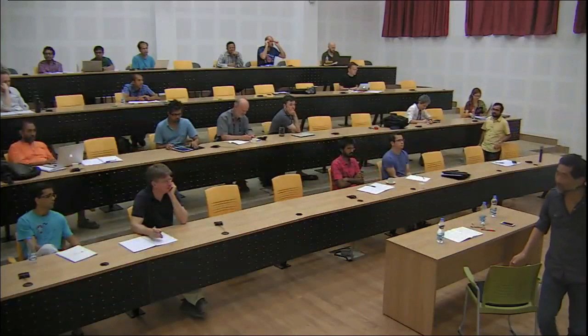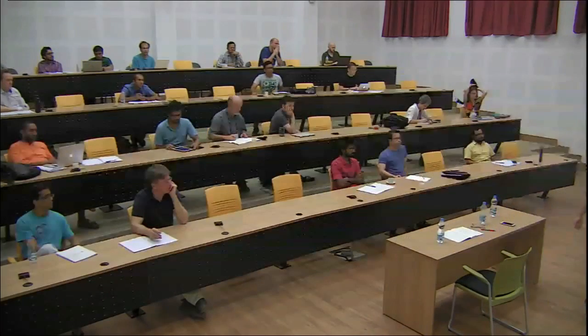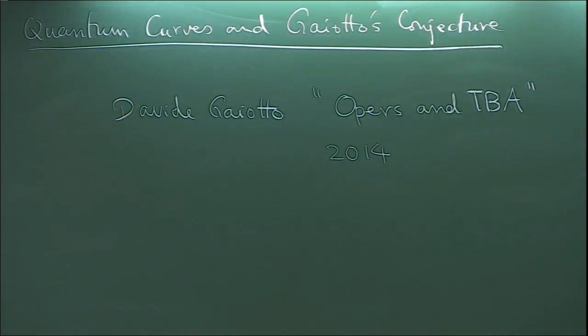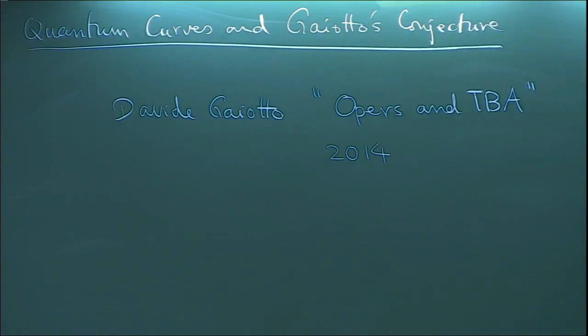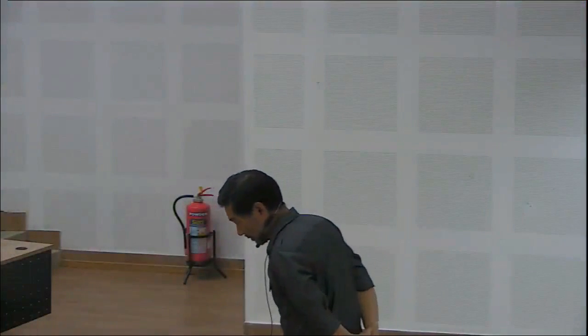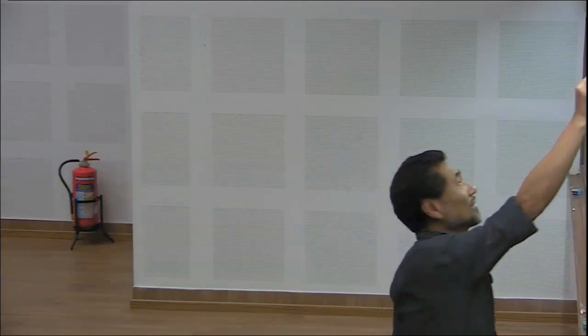Thank you for the invitation, in particular to the service. This is my first visit to India, and I'm enjoying the conference so far. Today I'd like to talk about the Gaiotto Conjecture and its recent resolution. The Gaiotto Conjecture is about certain branes in the Hitchin or Higgs moduli space. Instead of giving a conference-type talk, since this is the school part, I'd like to give a school-type talk, starting from a very naive question.